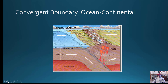Another convergent boundary type we looked at is ocean-continental, especially the west coast of South America with the Nazca plate subduction boundary. One characteristic of an ocean-continental subduction boundary is the ocean trench — the deepest areas of the ocean. As the oceanic crust subducts, it starts to melt, and that magma can reach the surface to form volcanic mountains. Continental crust is granitic or felsic, while oceanic crust is mafic, composed of iron and magnesium. The angle of subduction gives a rough idea of how far inland the volcanoes will be.